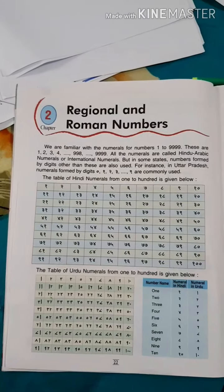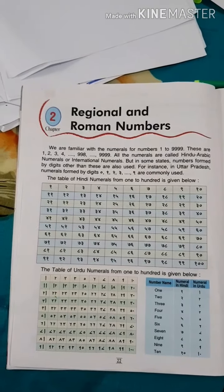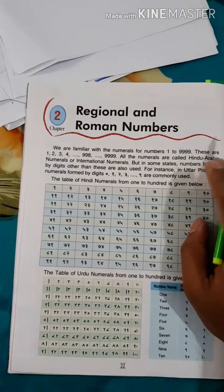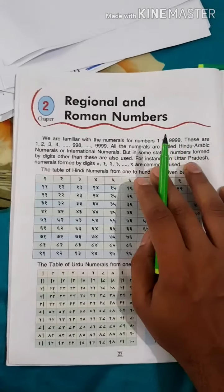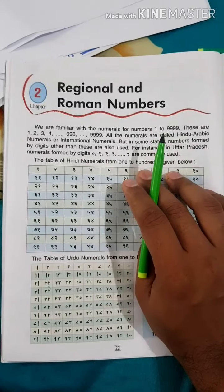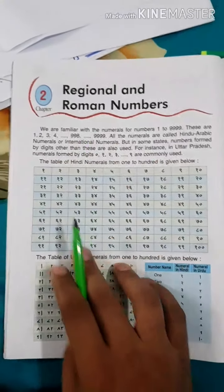Dear students, what if you take your mathematics textbook, copy, and a pencil. Today we are going to learn a new chapter. The chapter name is Regional and Roman Numbers, Chapter 2.